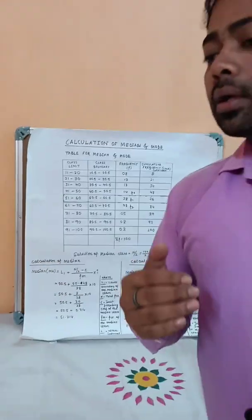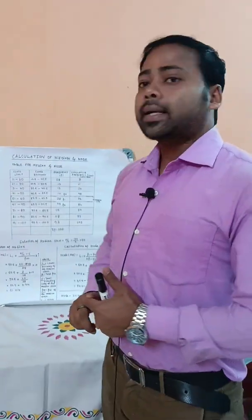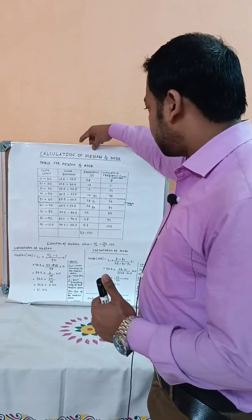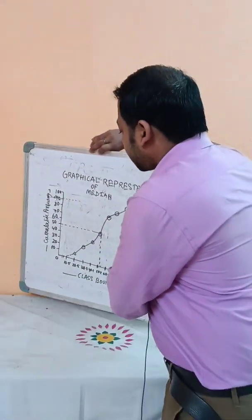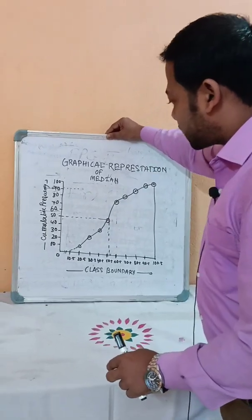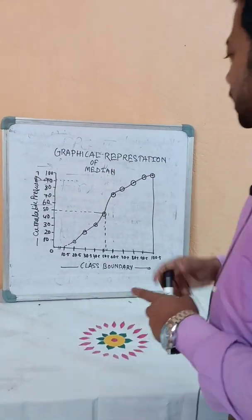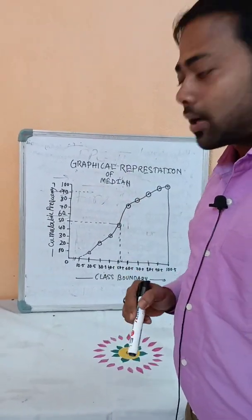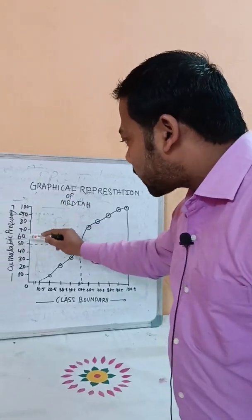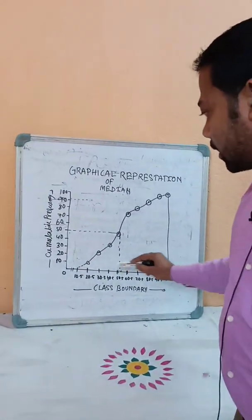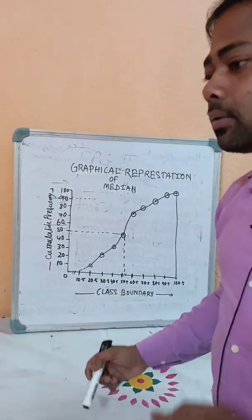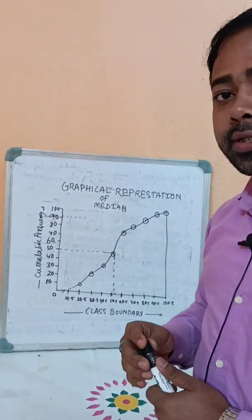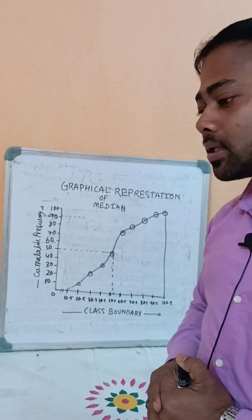If there is a graph presentation, you should see how much the graphical presentation should be done. You can see the graph presentation here — it is plotted on graph paper where 1 cm or 1 mm represents a scale.